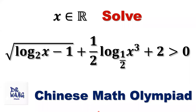Hello, everyone. I'm Dr. Wen. Here is the question. x is a real number. Solve this inequality to find x values: square root of log of x to the base 2 minus 1, plus one half times log of x to the power of 3 to the base one half, plus 2 is bigger than zero.